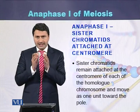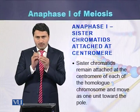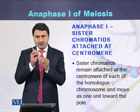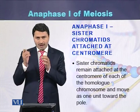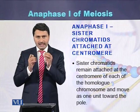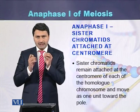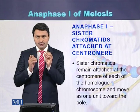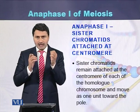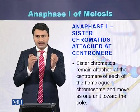They do not separate. Instead, a centromere that contains two sister chromatids moves to one pole, while the second homolog including a centromere that contains two sister chromatids moves to the other pole.